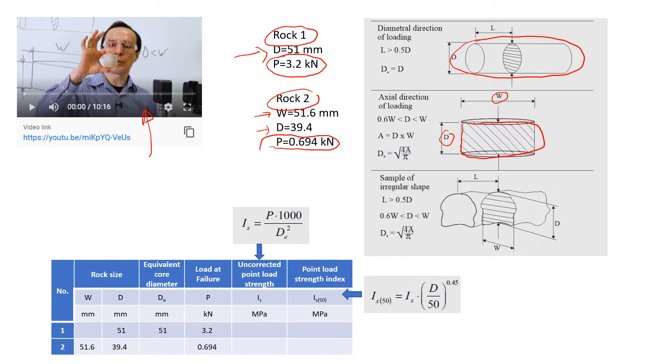Now I'm going to explain how we analyze this data and how we can get this point load strength index, which is shown in this column of the table. So this is the value that we're going to get.